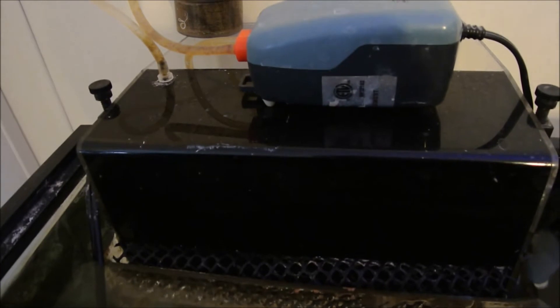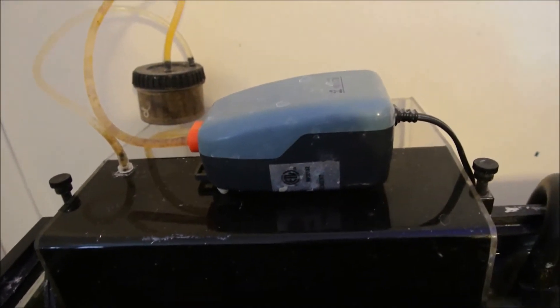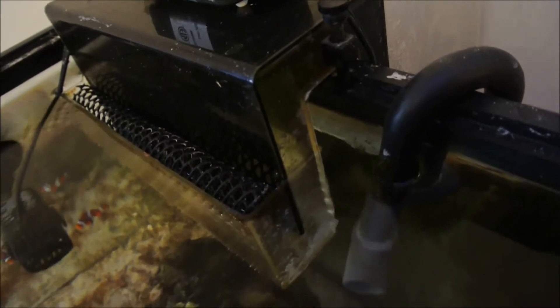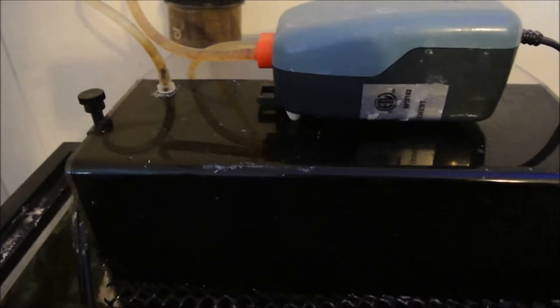So, the key component to the CPR continuous siphon overflow is the aqua lifter. The aqua lifter sucks air out of your siphon chamber and you can see it's the black section there and starts your siphon to overflow into your drain lines.